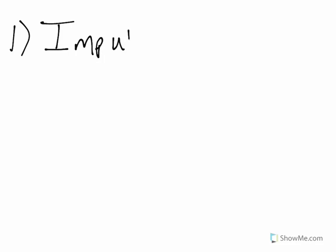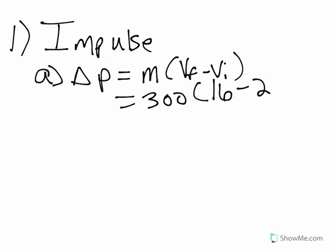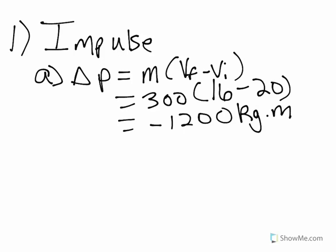We know from the start this is an impulse because it mentions a force. Anytime you have a force mentioned, it's an impulse. For part a, you're going to use the change of momentum equals m times vf minus vi. The mass is 300, the initial speed is 20 and the final is 16. That gives us negative 1200 kilogram meters per second.